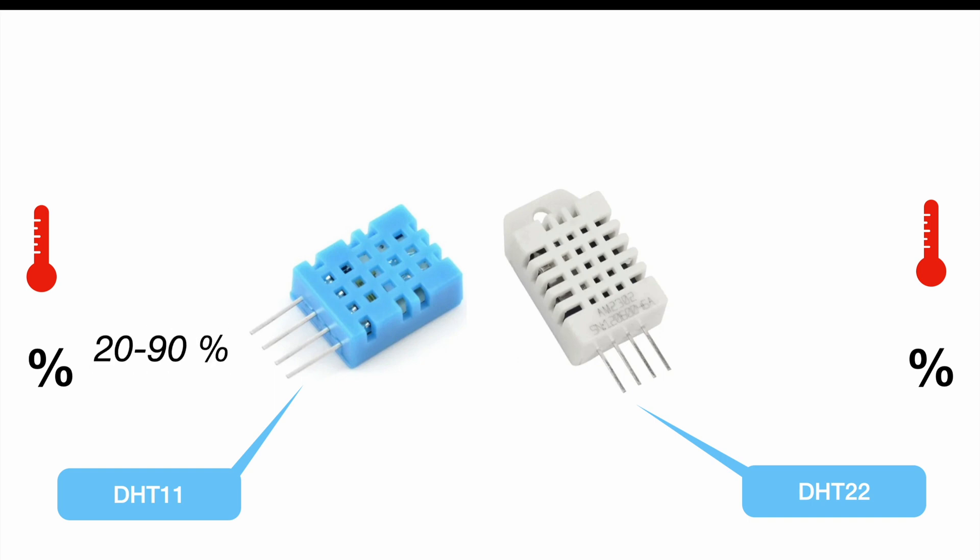The DHT11 can measure everything between 20 and 90 percent relative humidity. So every time we're talking about humidity we're actually talking about relative humidity in the air. So please don't confuse this with moisture of soil or anything else. This measurement range comes at an accuracy of plus minus five percent.